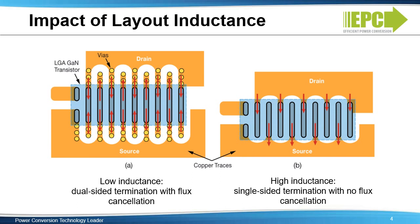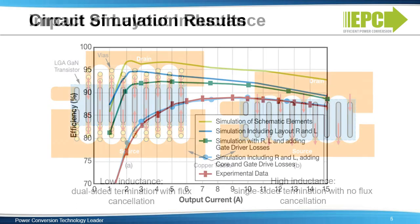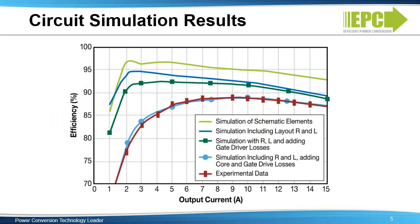Shown here is an illustration of how PC board layout impacts layout inductance for a given land grid array device termination. On the left side, figure A is a relatively low inductance layout. In contrast, on the right side, figure B is a higher inductance layout. An overall limitation of circuit modeling is that the results will only be as good as the accuracy and complexity of the circuit model used.